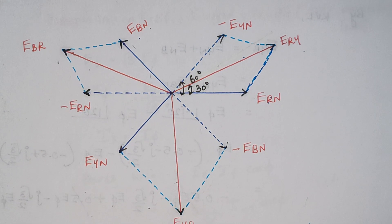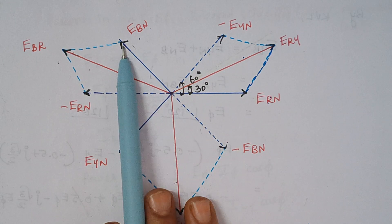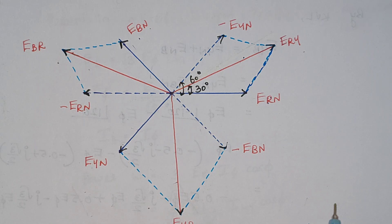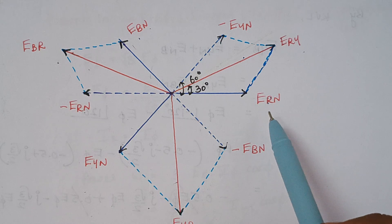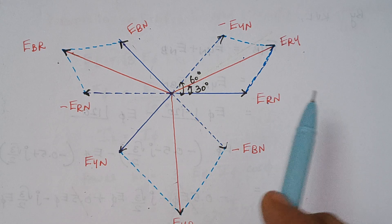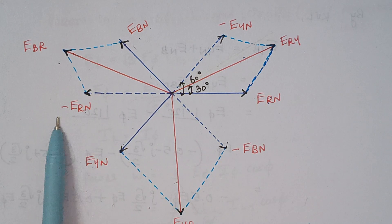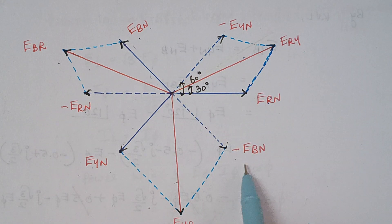Now, looking at the diagram, the first thing is we have to draw our phase voltages: E-R-N, E-Y-N, and E-B-N. These phase voltages are displaced from each other by 120 degrees. Now extend these voltages in the negative direction — when the direction is reversed, the voltage becomes negative. So in the positive direction we have E-R-N and in the opposite direction we have minus E-R-N. Similarly E-Y-N and minus E-Y-N, and E-B-N and minus E-B-N.